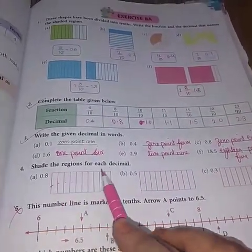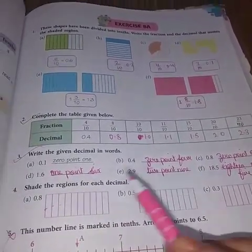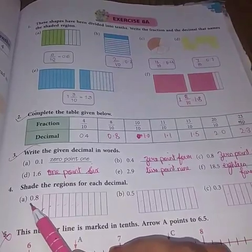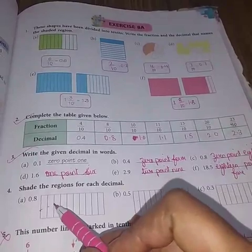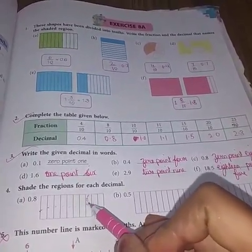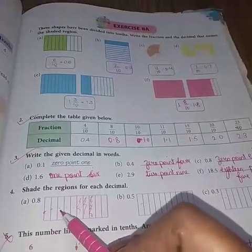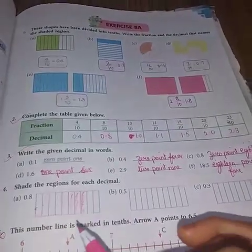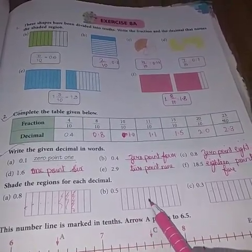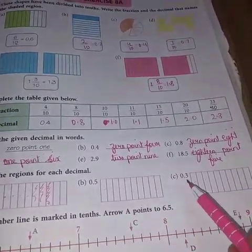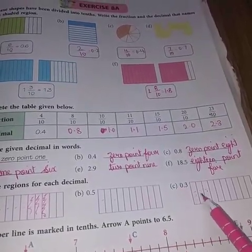Now shade the regions for each decimal. Here some pictures are given to you and we have to shade according to the decimal. This is 0.8. Means out of 10, 8 parts you have to shade. So any of the 8 parts you have to shade with the pencil completely. So 8 parts aapko shade karne hain. Here it is 0.5, to means aapko 5 parts shade karne hain. Here we have to shade 3 points. This is 3 pictures to be shaded.